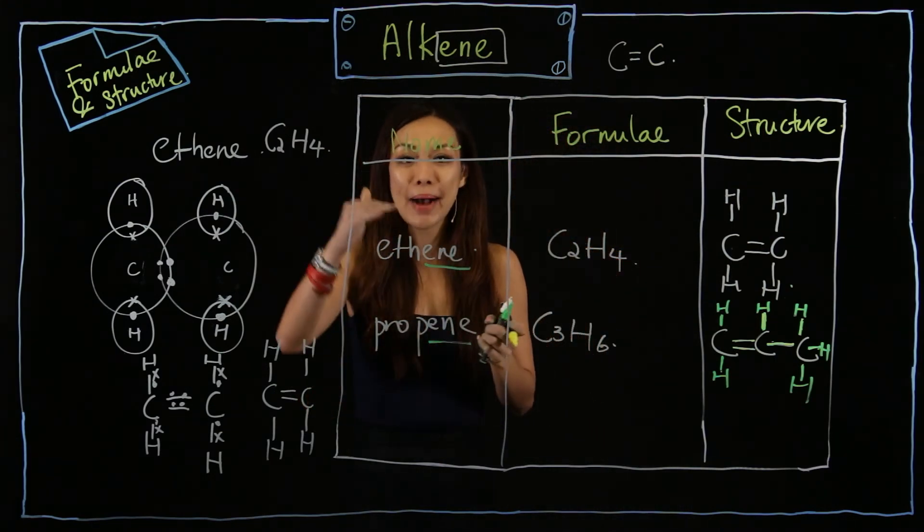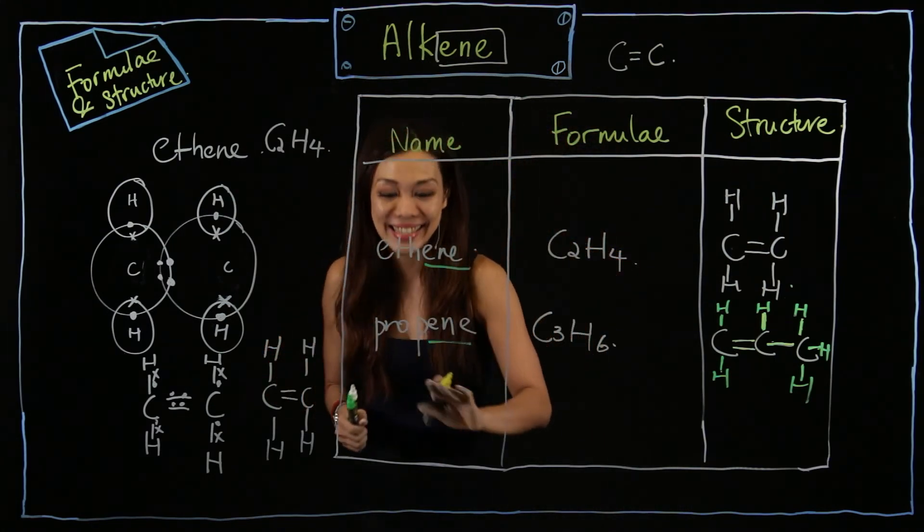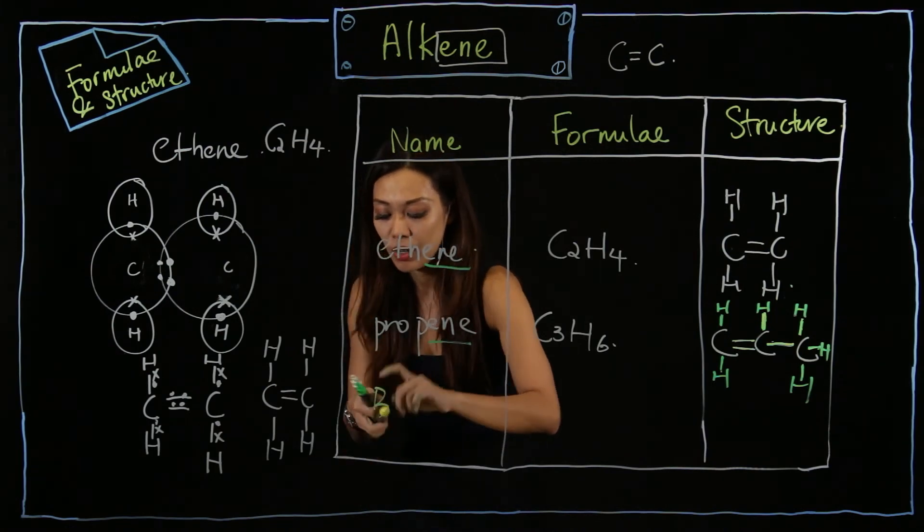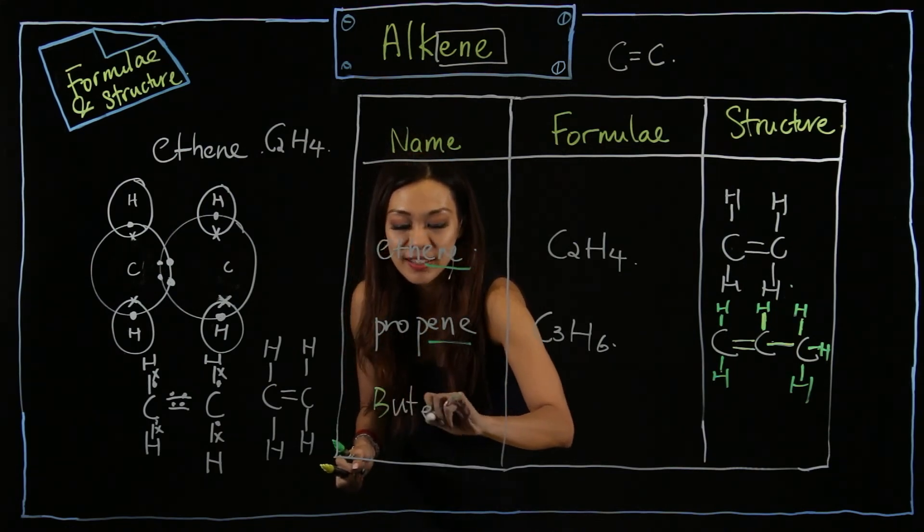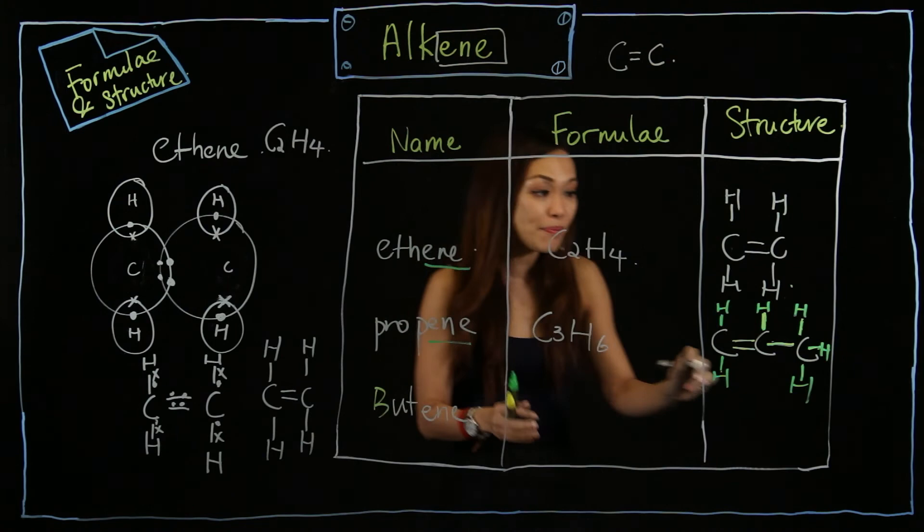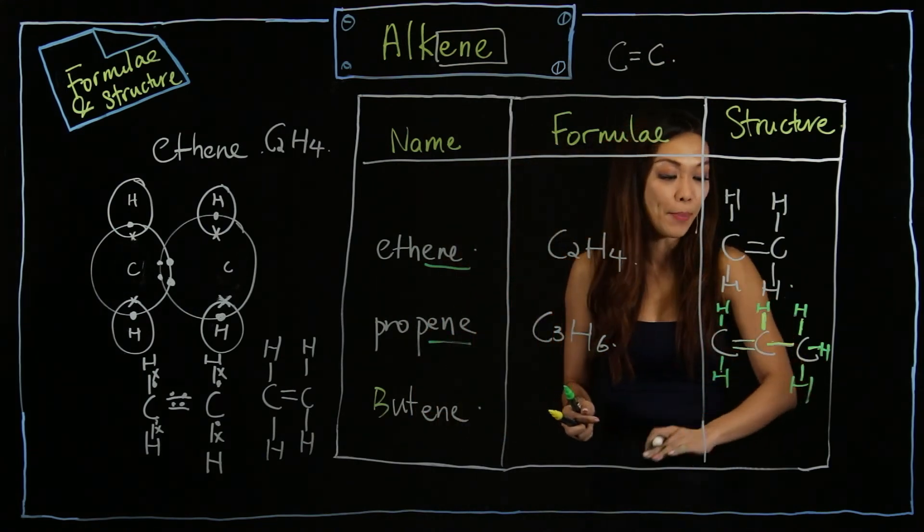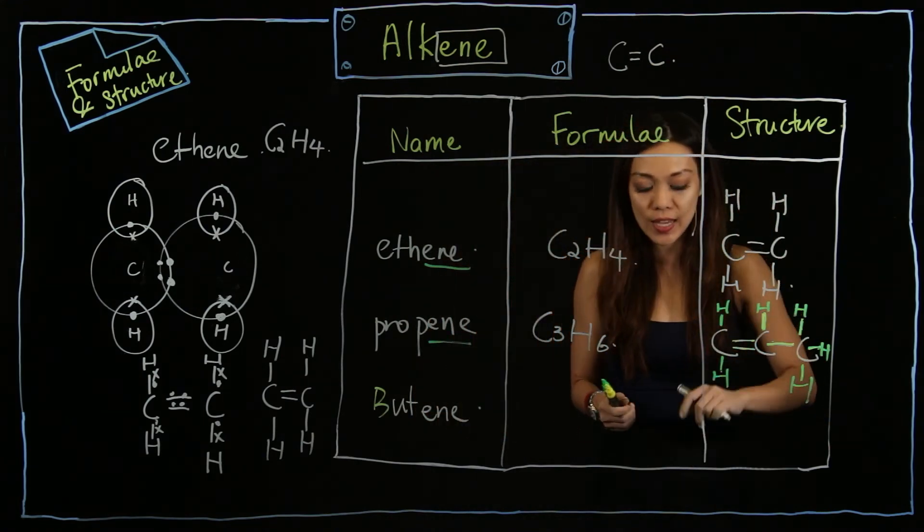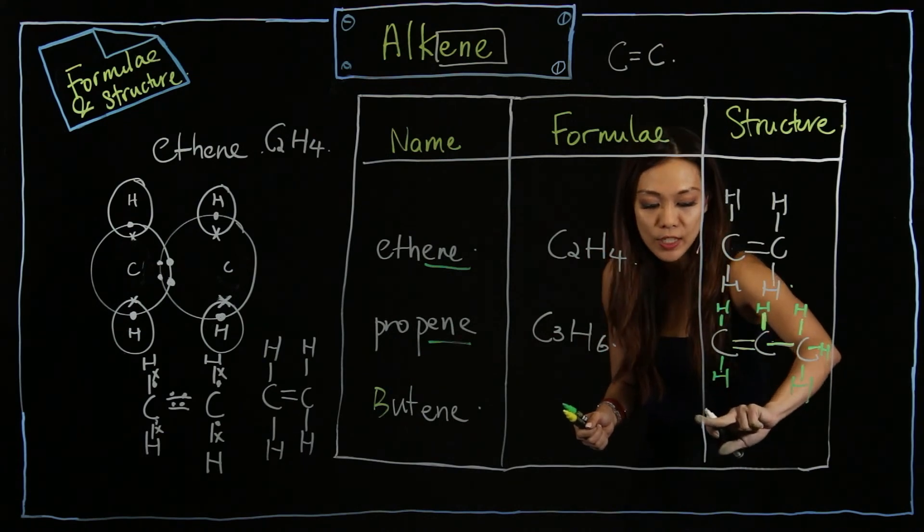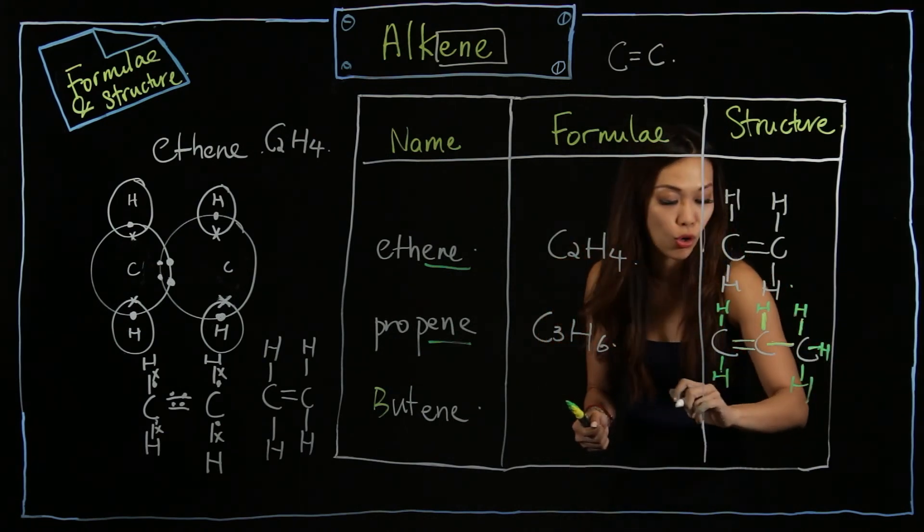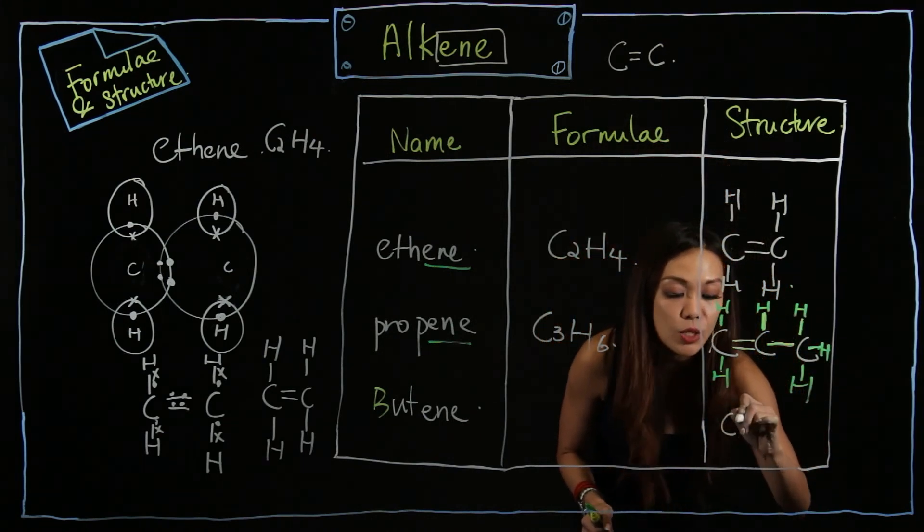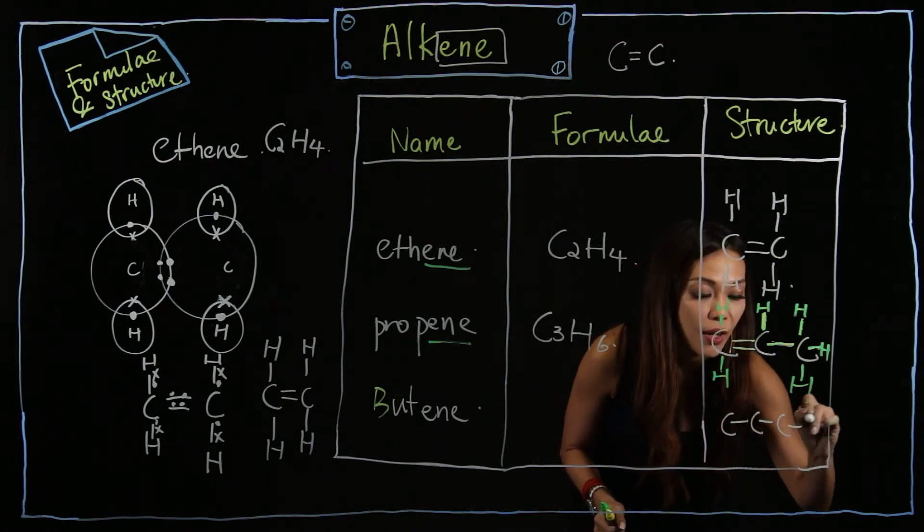Now, after ethene and propene comes butene. Same thing - let's draw the number of carbons. There are four C here. Because I don't have space, I'm going to draw it at this part, a little smaller. One, two, three, four. Is it too small?